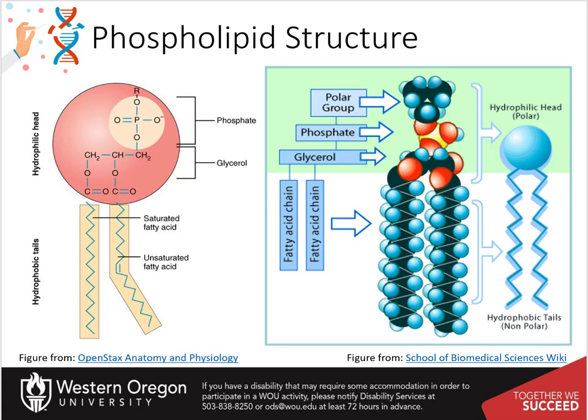The phosphate functional group is then further modified by the addition of other functional groups that are shown in more detail on the next slide. All phospholipids are amphipathic. They have a polar head and two non-polar hydrocarbon tails. Of the fatty acids incorporated into phospholipid structure, one is usually saturated and the other unsaturated.